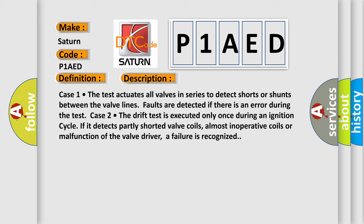Case 1: The test actuates all valves in series to detect shorts or shunts between the valve lines. Faults are detected if there is an error during the test.